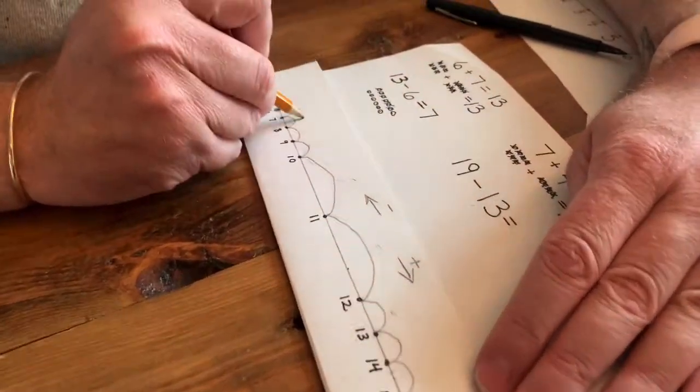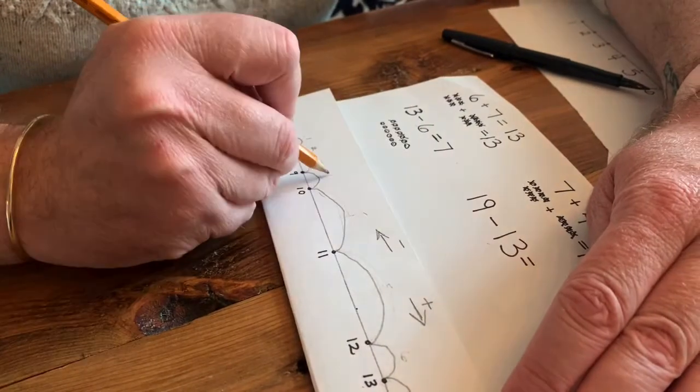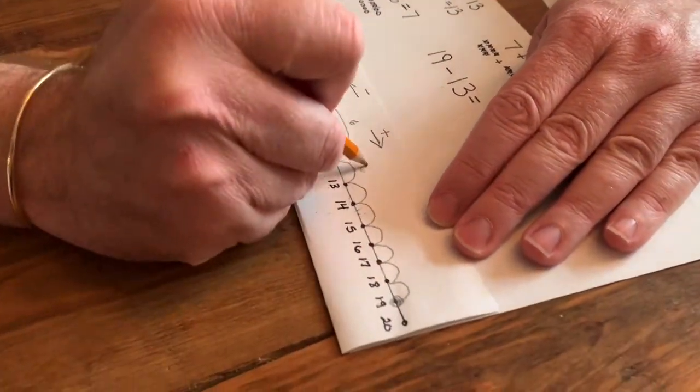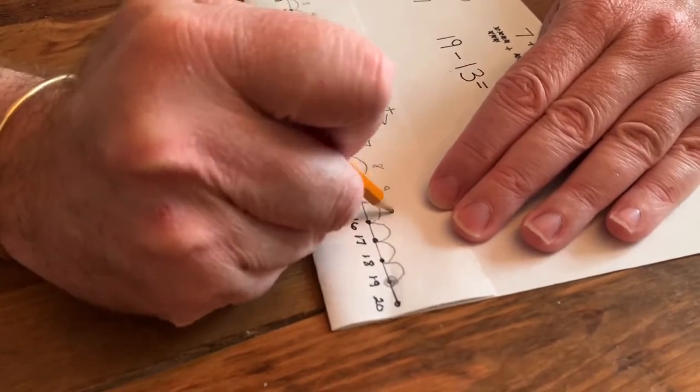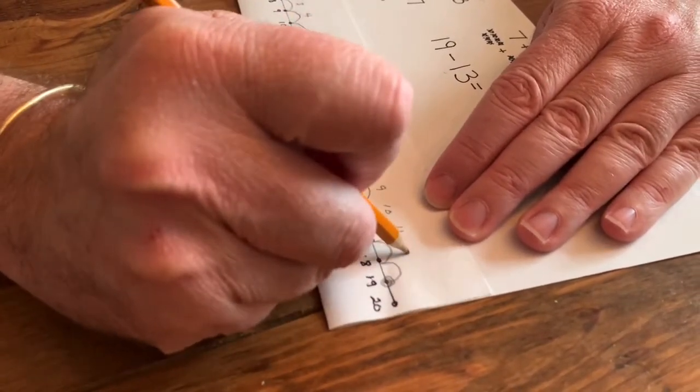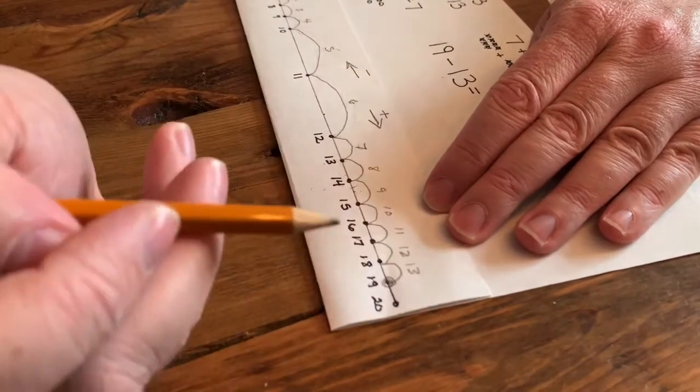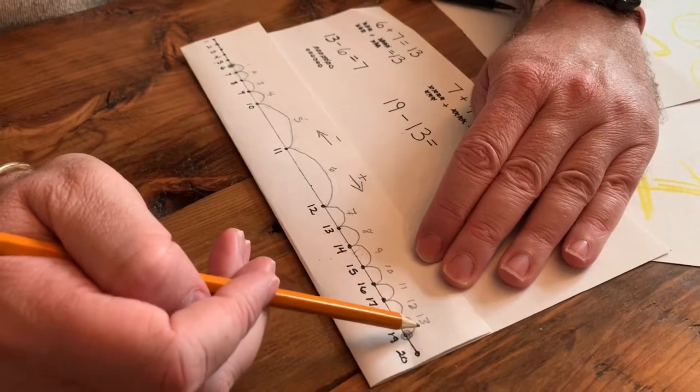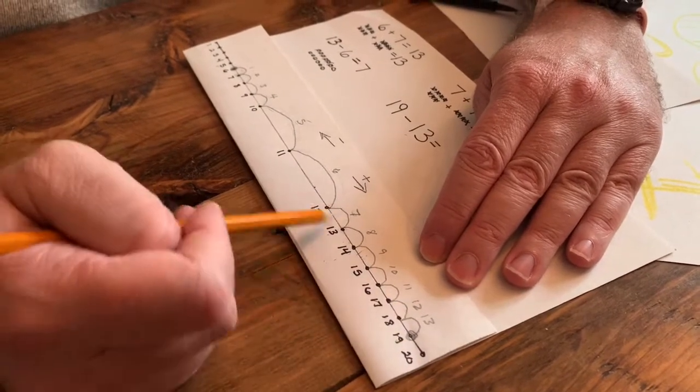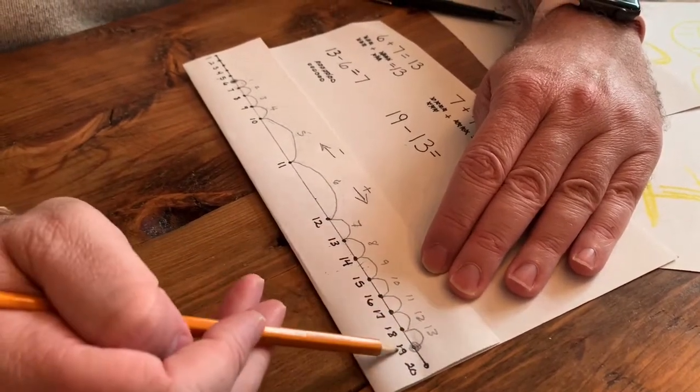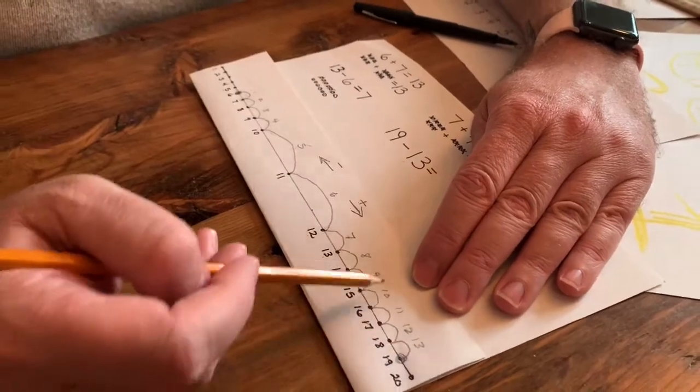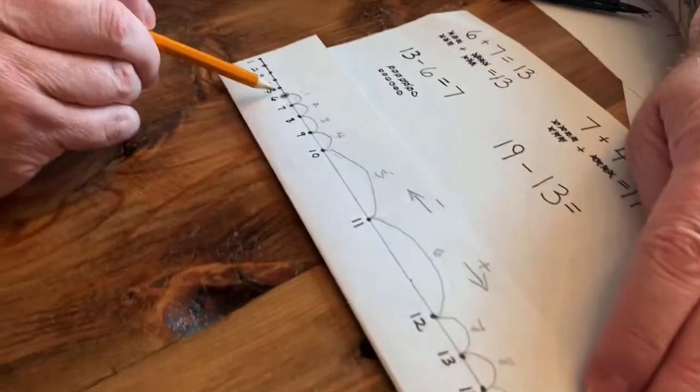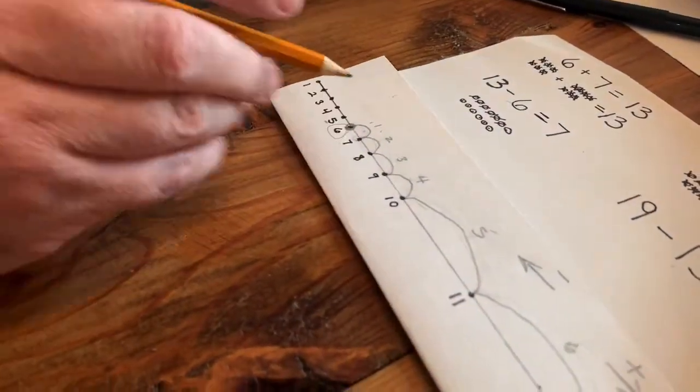Now let's count to make sure. 1, 2, 3, 4, 5, 6, 7, 8, 9, 10, 11, 12, 13. And notice I'm actually writing the numbers as I count them and not just putting tally marks or tick marks. So I know for sure that I'm doing the number. So I started at 19. I did 13 leaps. So I'm at the right spot. So 19 minus 13 is 6.